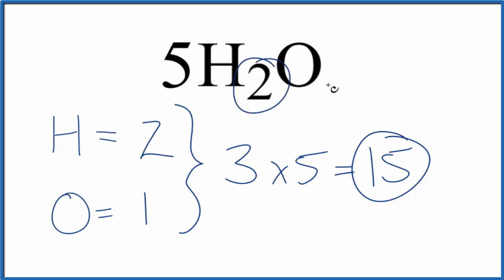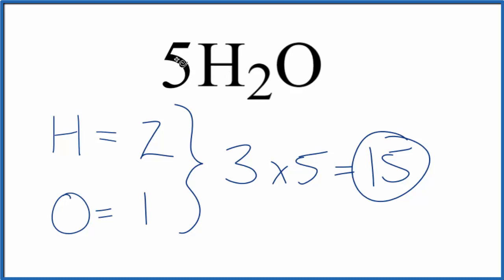Note that the 2, and that 1 that we don't write — these are subscripts. They tell us how many we have of each atom: one oxygen, two hydrogens. The 5, though, is a coefficient, and that will often change depending on the context. So if you had 10 water molecules, it'd be 10H2O, or one mole of water molecules — that would be 6.02 times 10 to the 23rd water molecules.